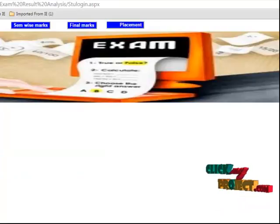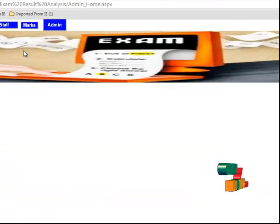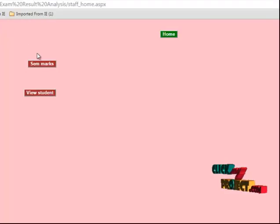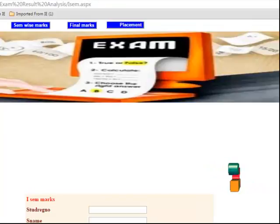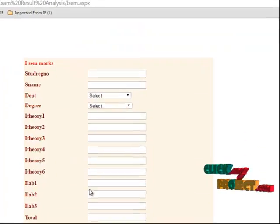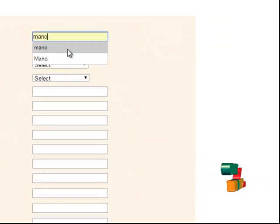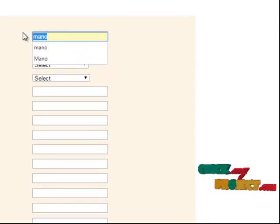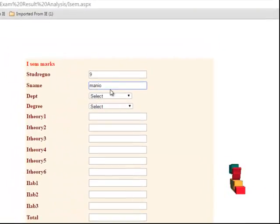Then another staff login. Staff to view, to register the semester-wise mark. First sem to eighth sem. Then student reg number nine. Student name Manu. Then to click your department and degree.